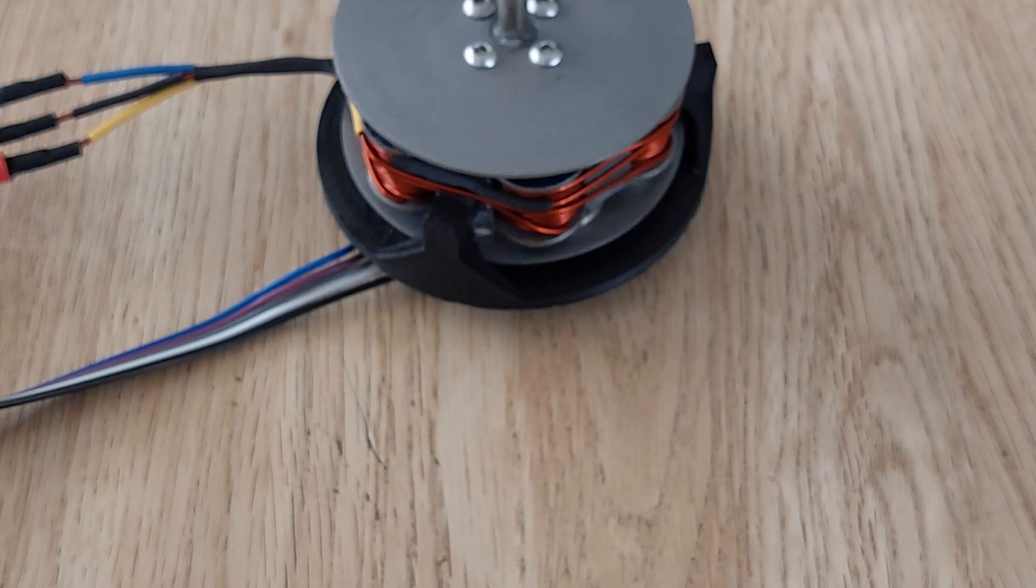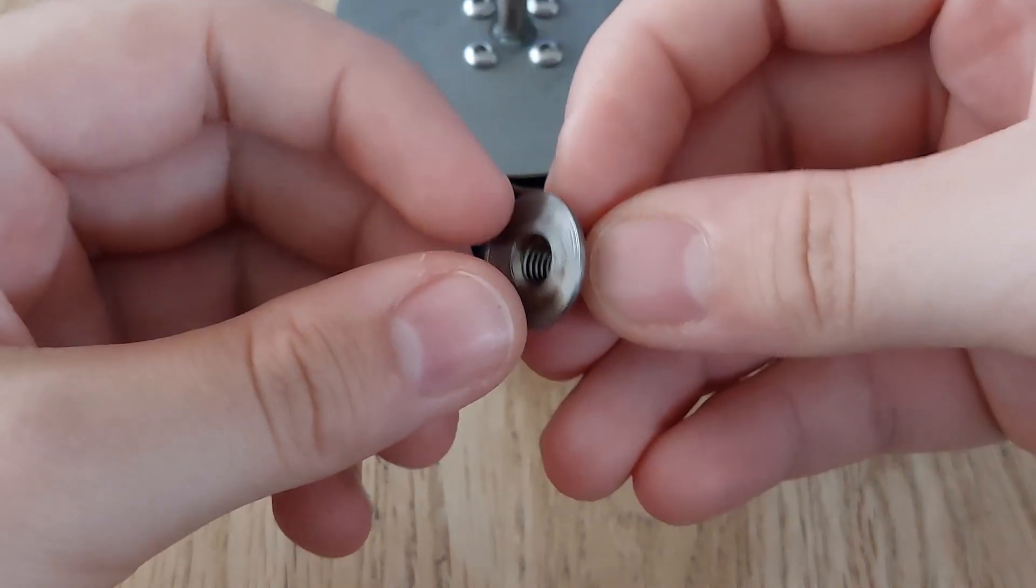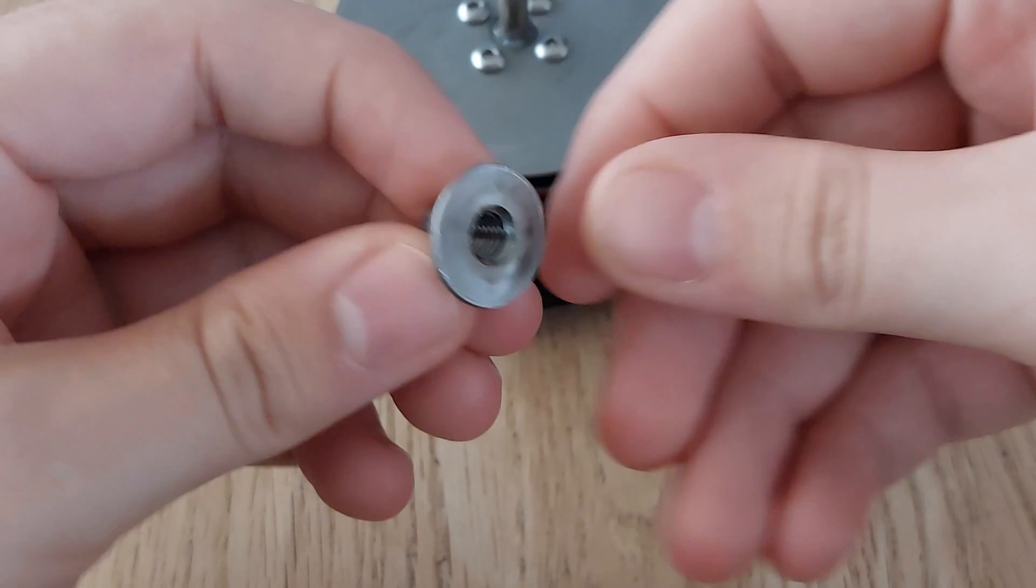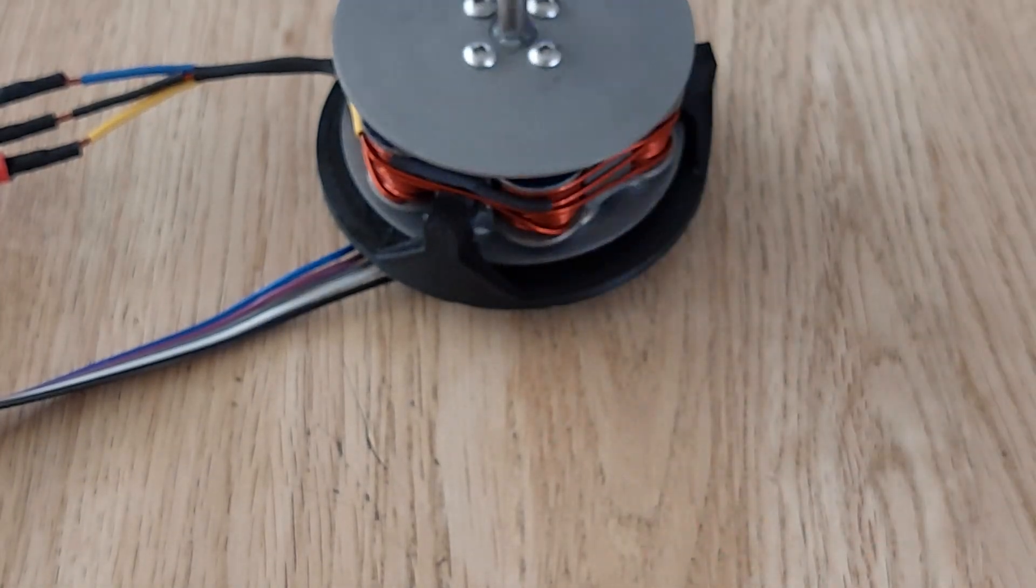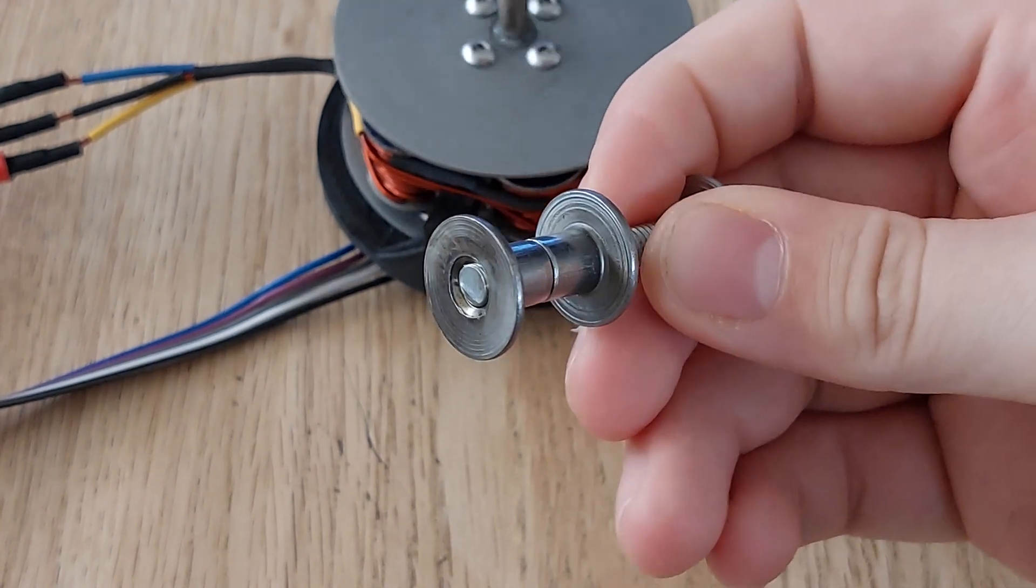The spools are made from weld nuts. I bought the cheapest ones but they were a bit crooked so I recommend you buy some higher quality ones. These are held back to back with a piece of threaded rod.